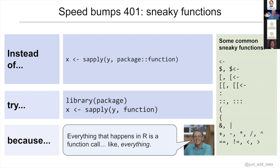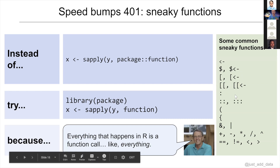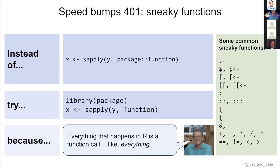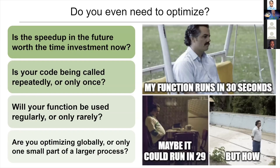The best way is to load the package first and not call the namespace directly with the two colons, because those two colons are also a function call. A lot of sneaky functions don't take a lot of time to execute, so it's not always a huge deal — but if you are running code over and over again and using dollar sign, square bracket assignment, or double colon, that's a function call each time. If you call it too many times it actually ends up taking a lot of time — it can be surprisingly costly.